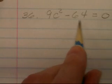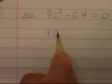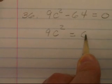And so actually we want to begin by adding 64 to both sides. This will give us 9c squared is equal to 64.